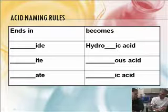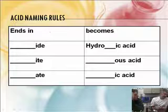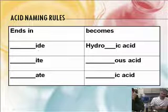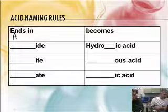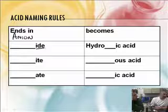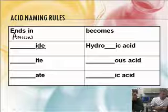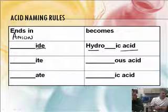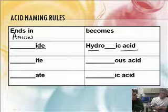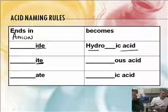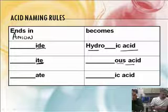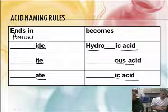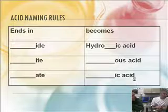Okay. When we name acids, we actually have to look at the polyatomic ions. Yes. If the name of the, not just polyatomic, the name of the anion. The anion, yeah. The name of the anion, which is the second part. Right, because the cation in acids is always the same, it's always H, H plus. So if the anion ends in the ending I-D-E, the suffix, then it's going to become a hydro-something-ic acid. So let's say like chloride? Yeah, chloride. It becomes hydrochloric acid.